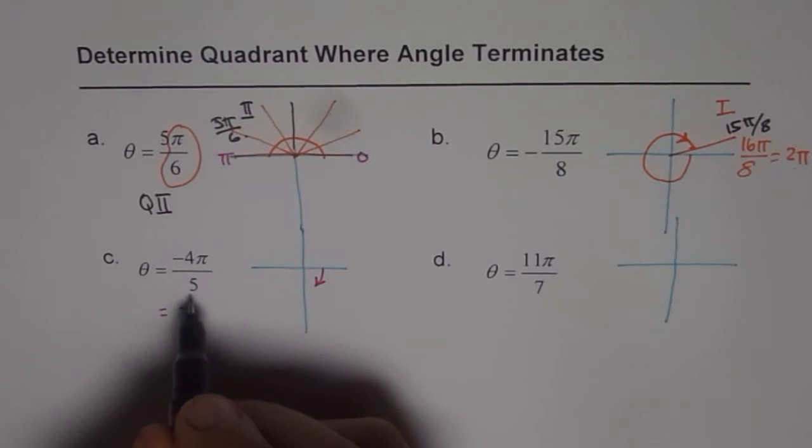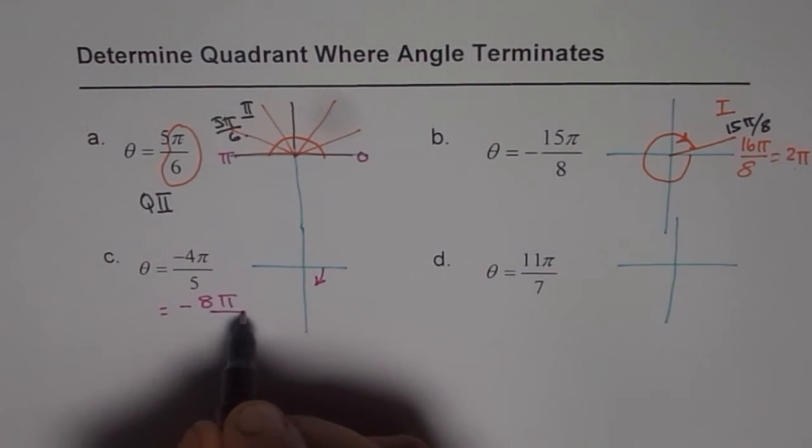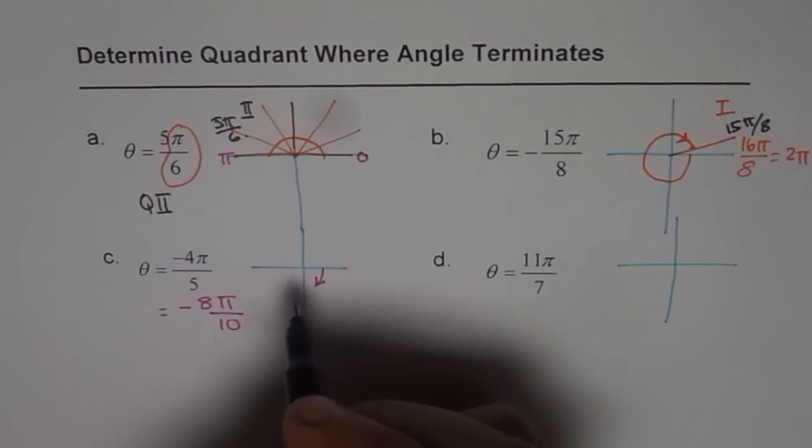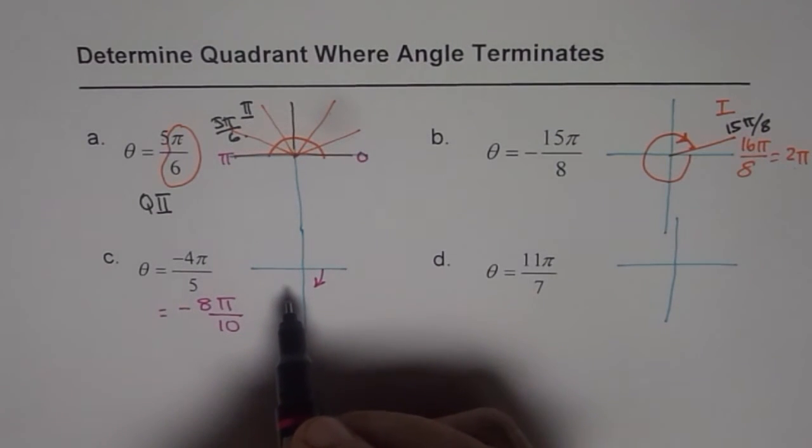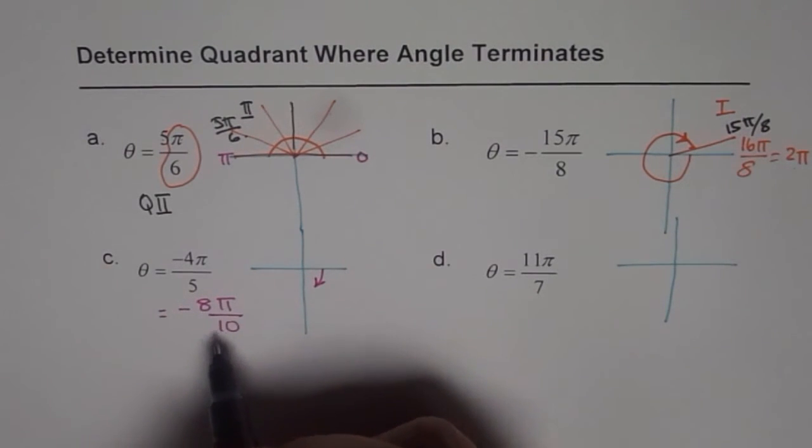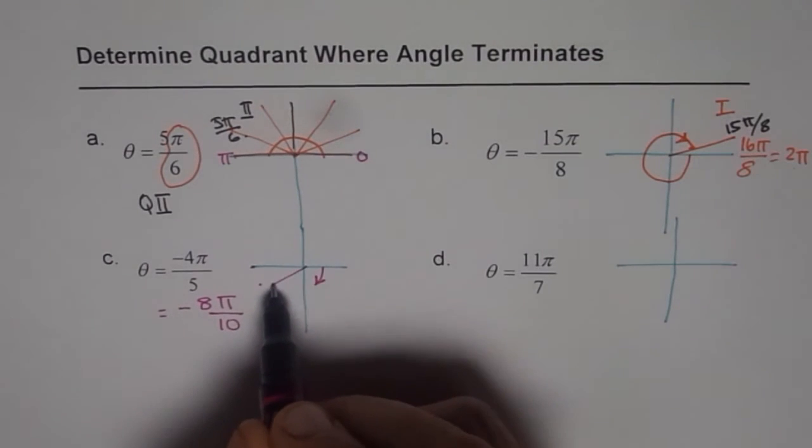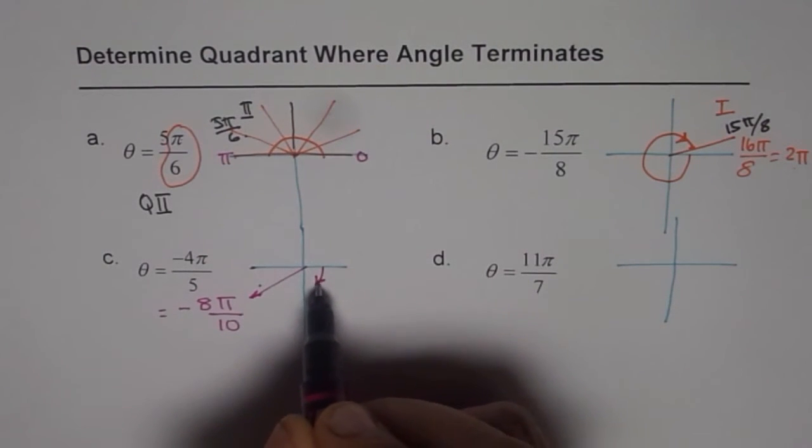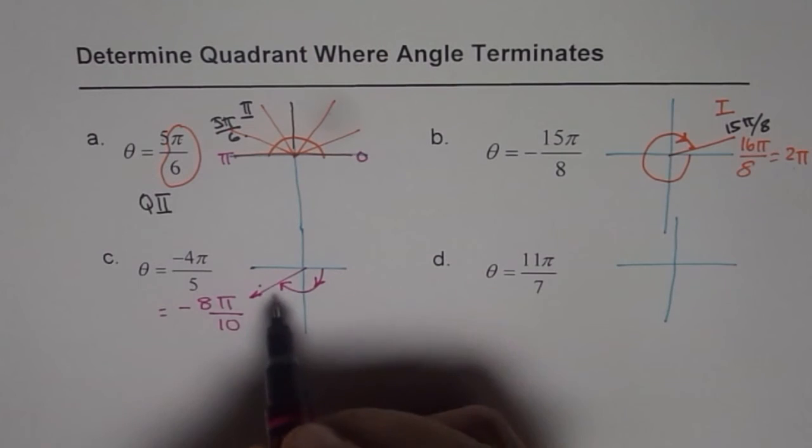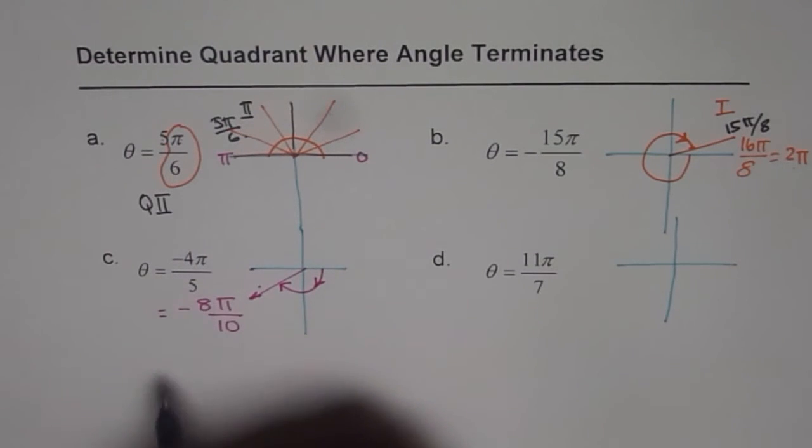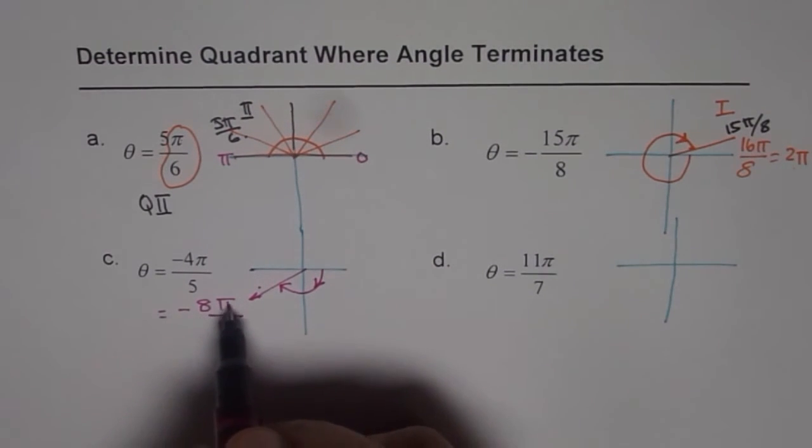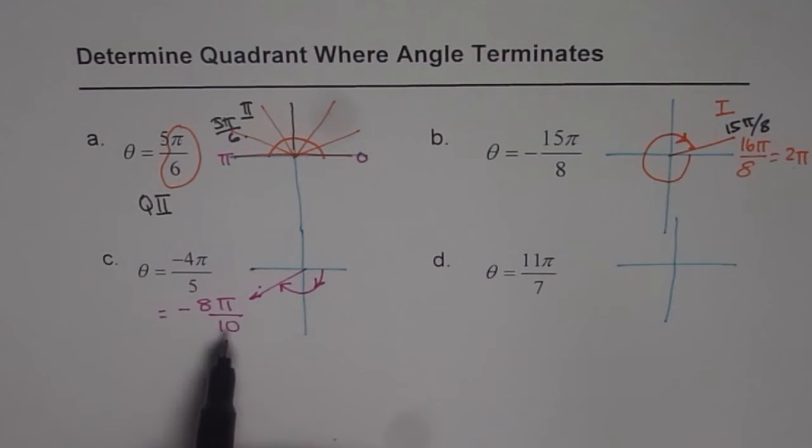Minus, let's multiply both by 2. So we get minus 8 pi by 10. So we can divide the pi in 10 equal parts, right? So this is going to be the 10th part. 8th will be kind of here. Is that okay? So that is where it is going to end. So this is minus 4 pi by 5 or minus 8 pi by 10. So that's a brilliant idea.